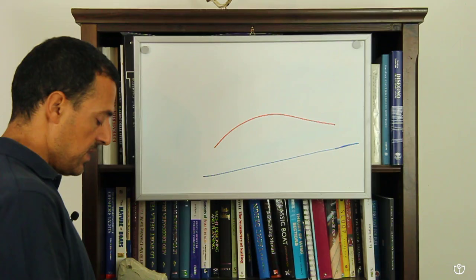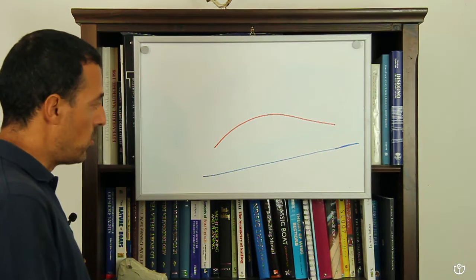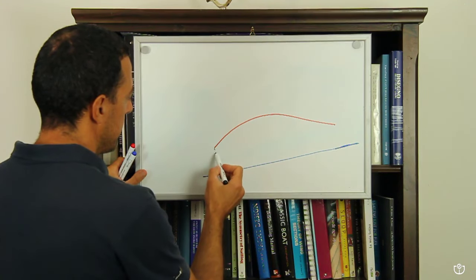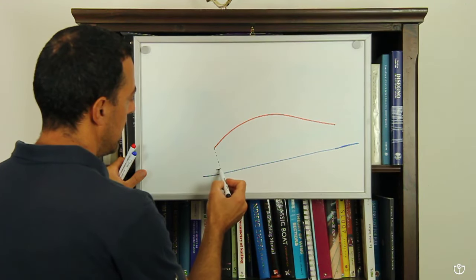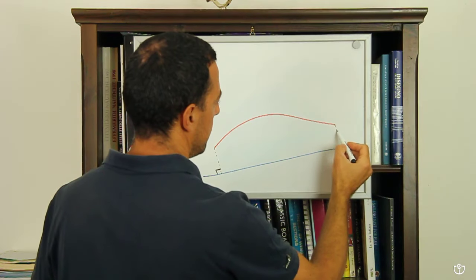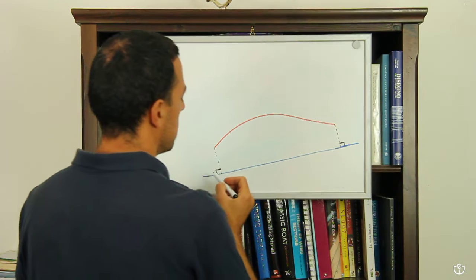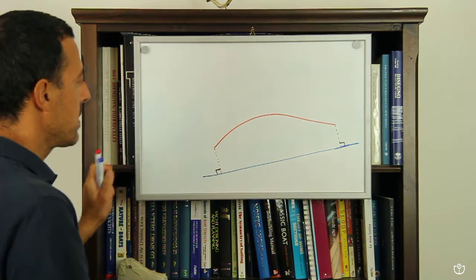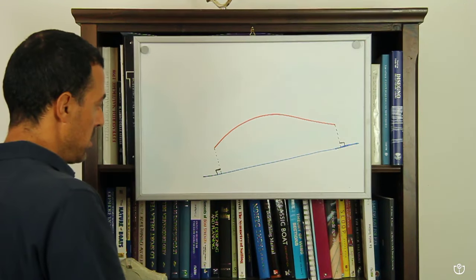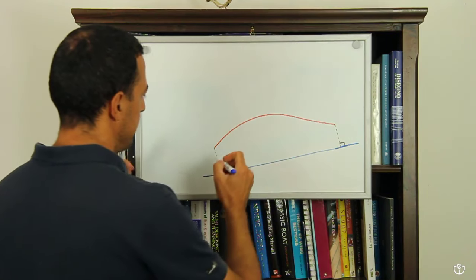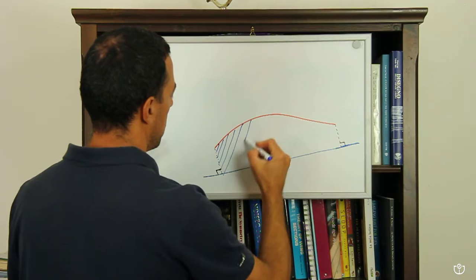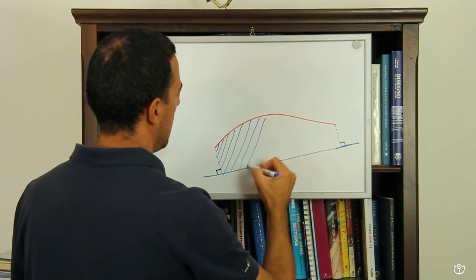Cosa significa area sottesa da questa curva? Se noi tracciamo le perpendicolari dagli estremi della curva al nostro segmento, quindi questi angoli sono di 90 gradi, l'area sottesa sarà esattamente l'area di questo settore. È l'area compresa tra la curva, il segmento che abbiamo tracciato e le perpendicolari.